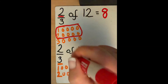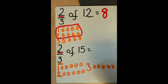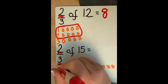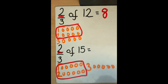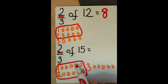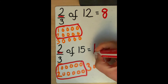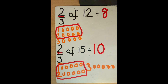This time we need to look at our numerator, which tells us we need to count 2 of those groups. Counting those 2 groups gives us 10. So 2 thirds of 15 is 10.